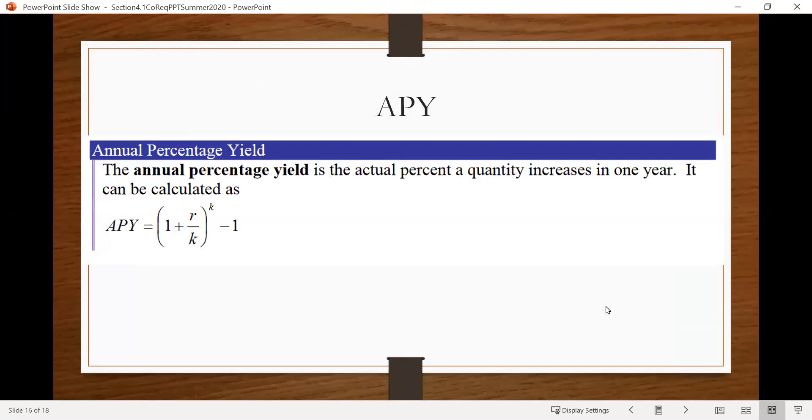All right, let's talk about something called APY, which stands for annual percentage yield. And as it says, this is the actual percent a quantity increases in one year. Wait, what? Okay, so here's what this is talking about.